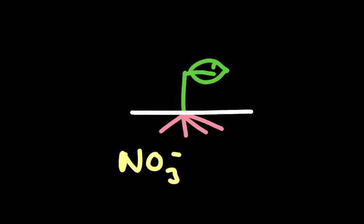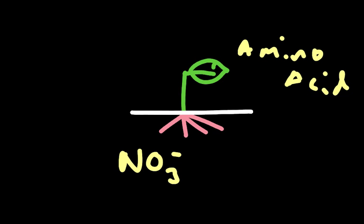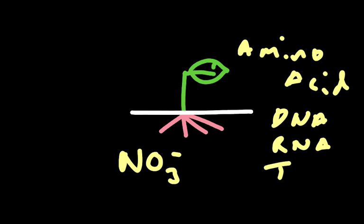One is amino acids and the other is nucleotides. Those nucleotides are DNA, RNA, and then ATP, which is a modified nucleotide. Now the amino acids get turned into protein, and the nucleotides get turned into DNA and RNA, and get used for the growth of the cells and of the plants.